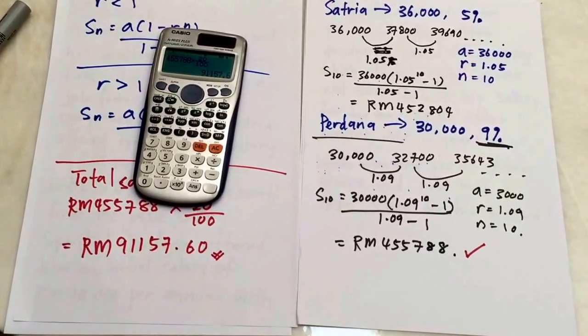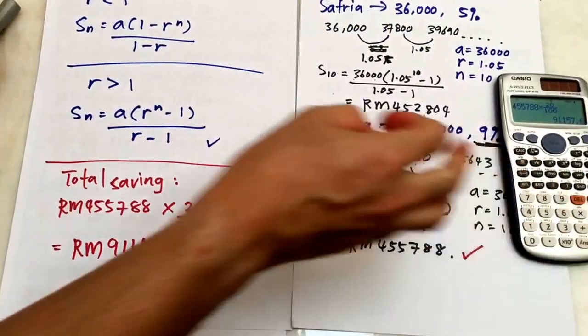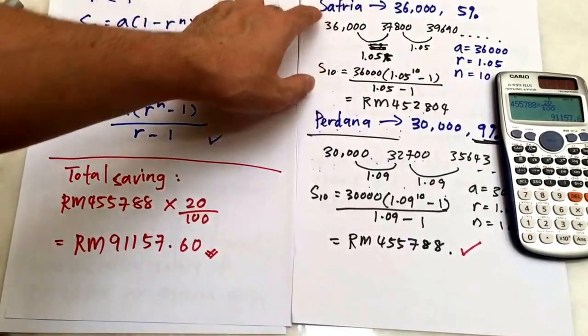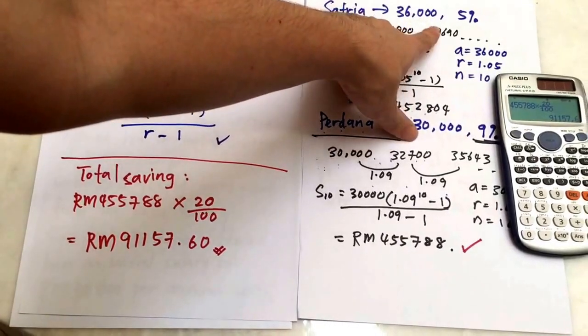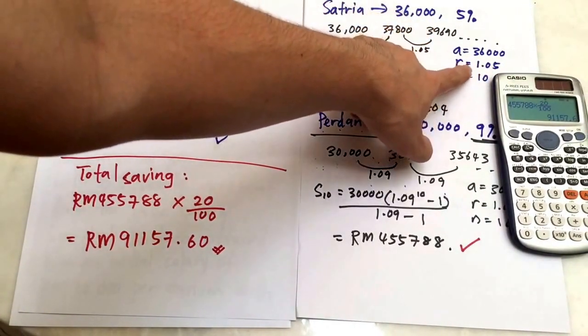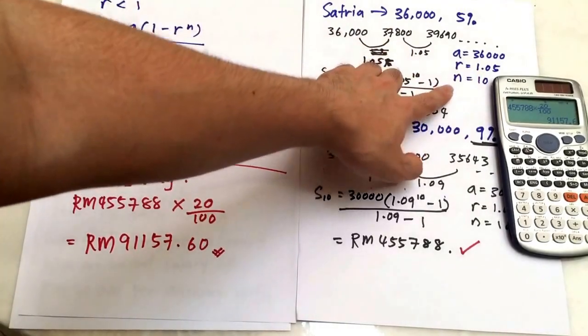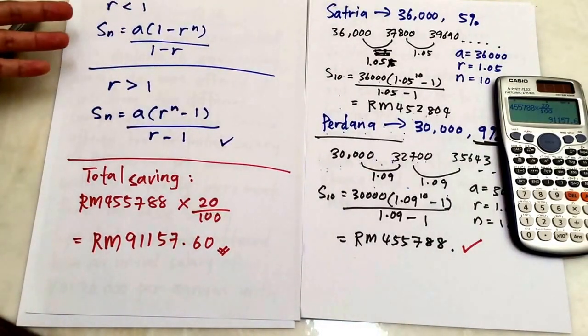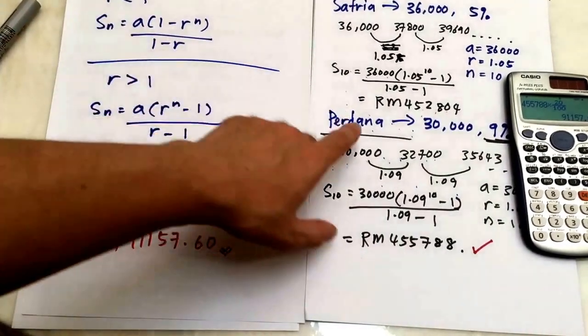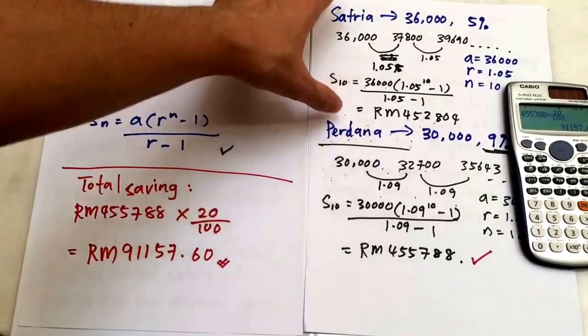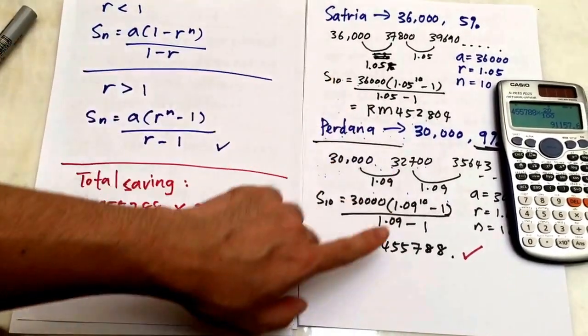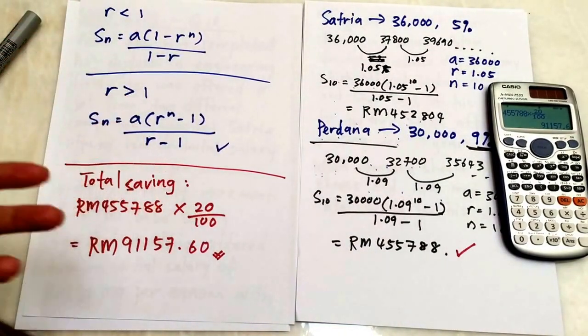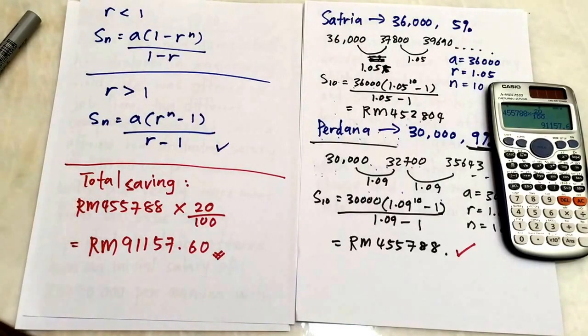This is how we solve the question like this. For this question, it's so important that you work it out for both companies. You understand which is the A term, and the r is not 0.05—the r is 1.05. And then n is 10 years. You apply the correct formula into it. Because for geometric progression, you have two formulas. You work out for Satria and Berdana and choose the highest amount. After that, you're going to multiply by 20% because this is the amount they will use for study.